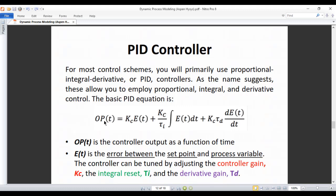In this equation, OP(t) is the controller output as a function of time. E(t) is the error between the set point and the process variable. The controller can be tuned by adjusting the controller gain Kc, the integral reset Ti, and the derivative gain Td.